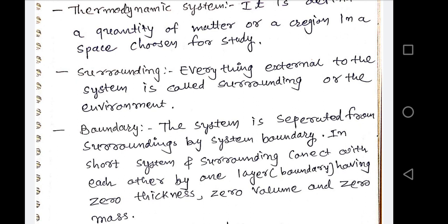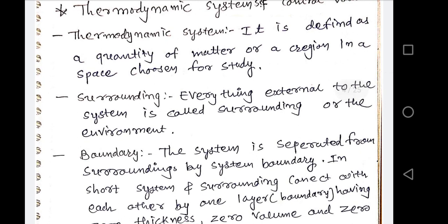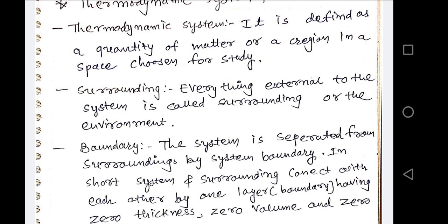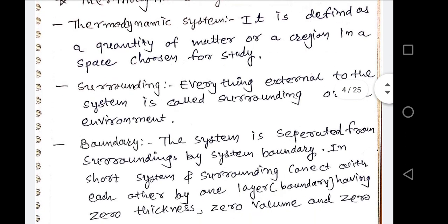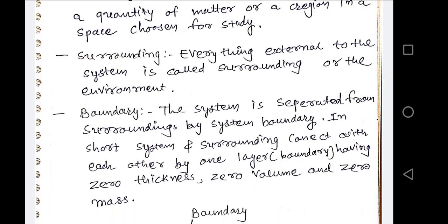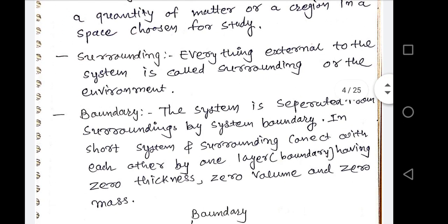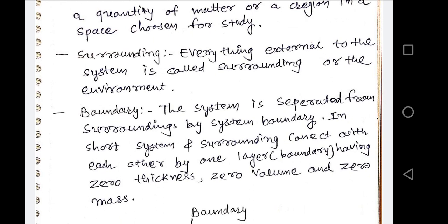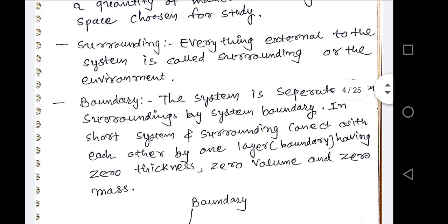Everything external to that system is called the surrounding or environment. You are sitting in a room, numbers of substances are there — out of those substances you choose one. All the remaining outside substances are known as the surrounding, and that chosen substance is known as the thermodynamic system. The system is separated from the surrounding by a system boundary — an imaginary line with no physical dimensions like length, diameter, area, or volume.